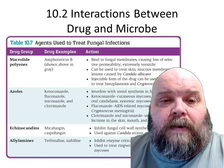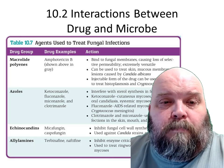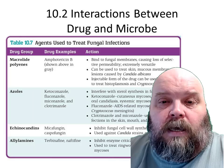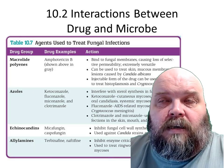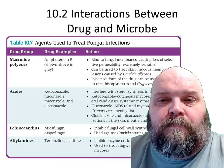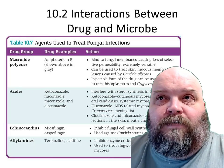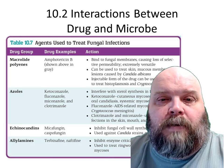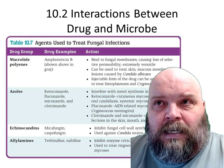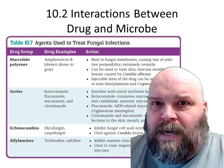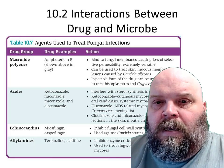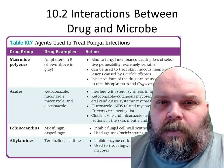One of the big ones is Amphotericin B. Amphotericin B is a drug that binds to fungi membranes and interferes with permeability, so that things cannot pass through the membrane readily. Here's the wrinkle.